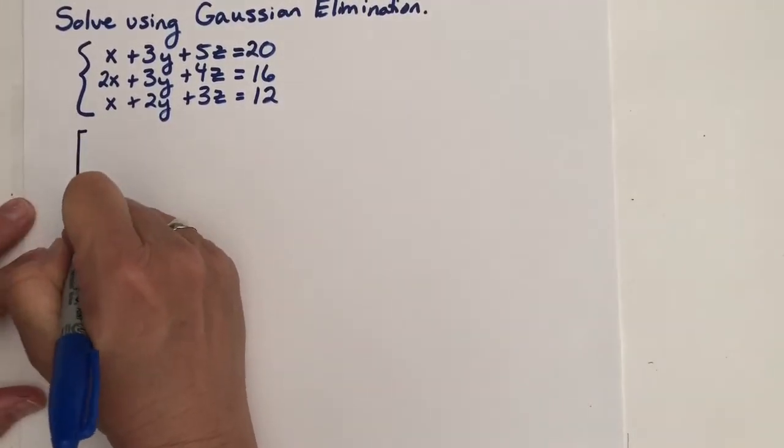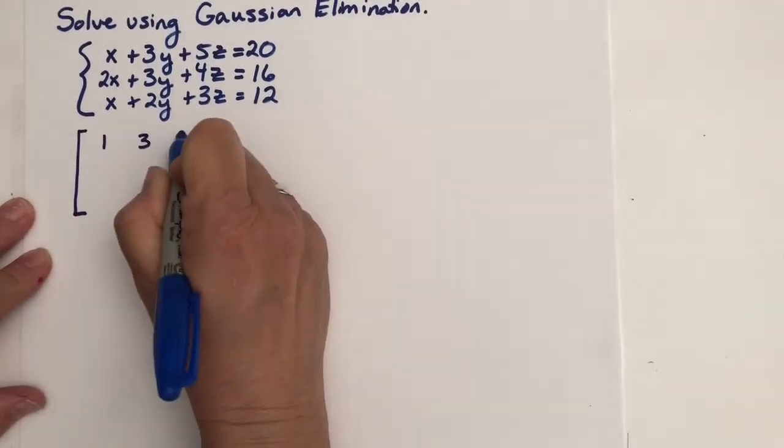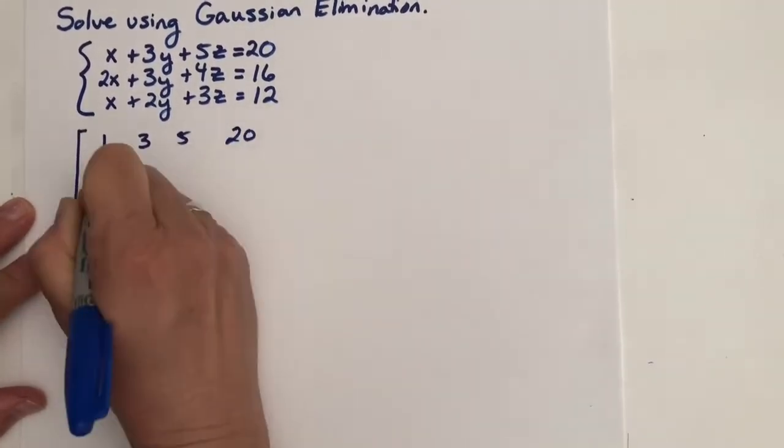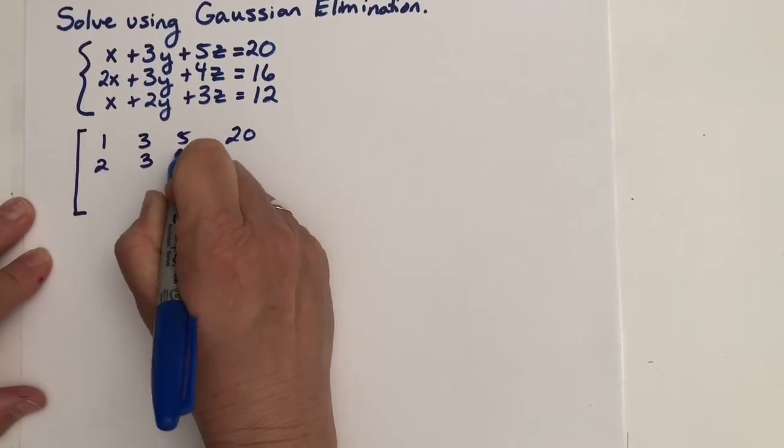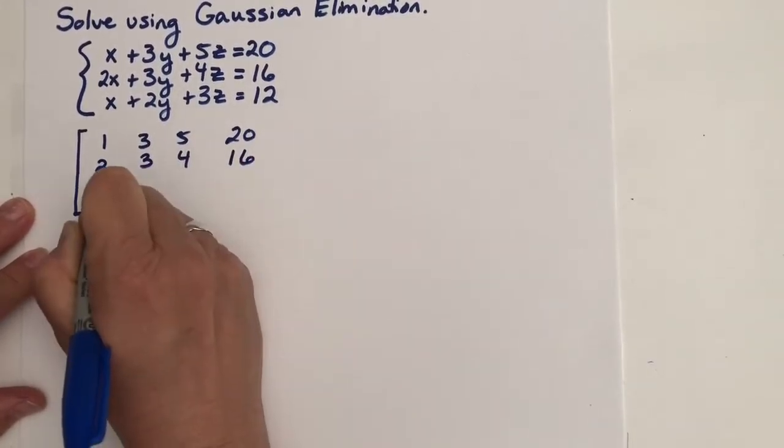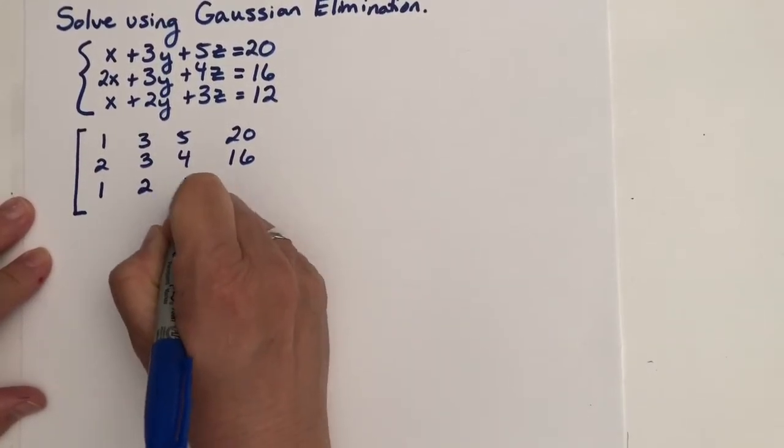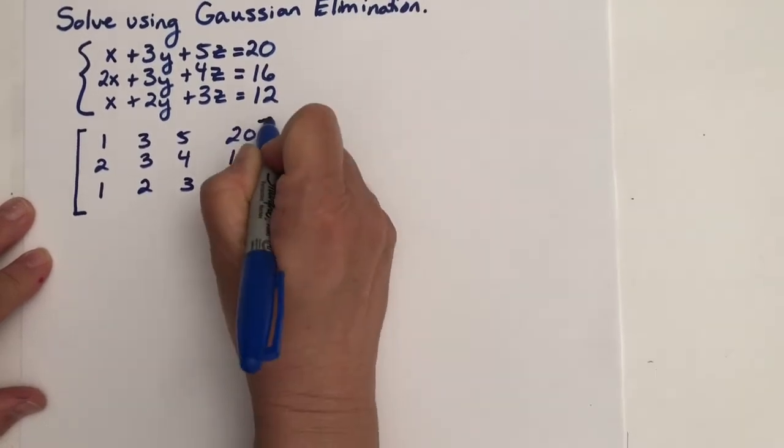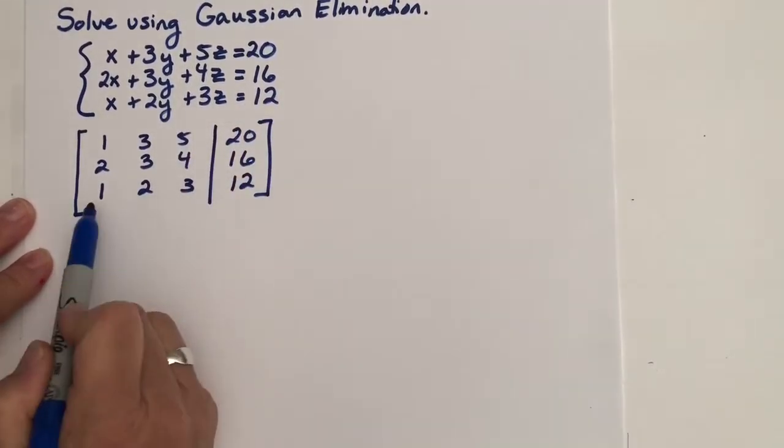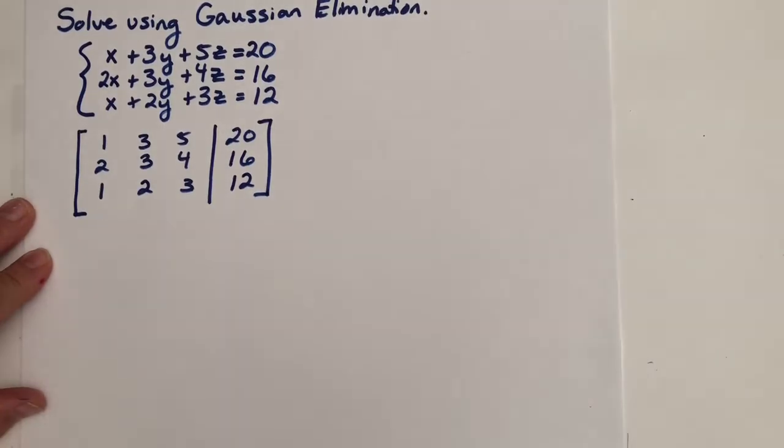So let's write our system as an augmented matrix. So I will have 1, 3, 5, 20, 2, 3, 4, 16, and 1, 2, 3, 12. And I'll draw a line here separating the coefficients from the constants.